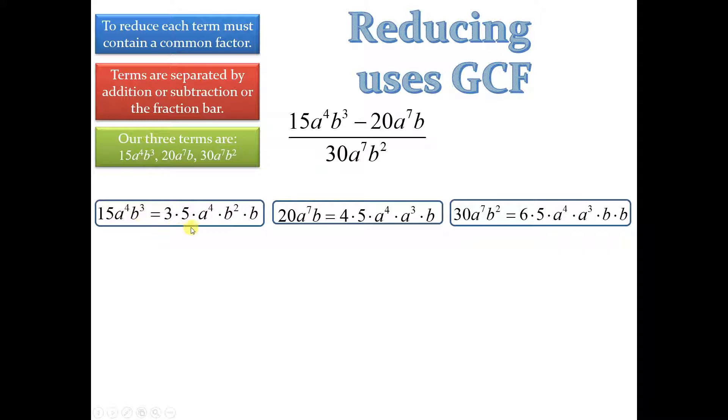15 a to the 4th b cubed. Now, I didn't want to write out 4 a's and 3 b's because when I'm looking, I see that if I have 7 a's, then 4 is included in that. So, what I did is I broke them all apart into groups of 4 a's. Like, right here, this is a to the 7th. And over here, from the denominator, that's a to the 7th. And I saw that there was at least one b in each term. So, I didn't break this apart into b times b times b. You see, I broke it into b times b squared.